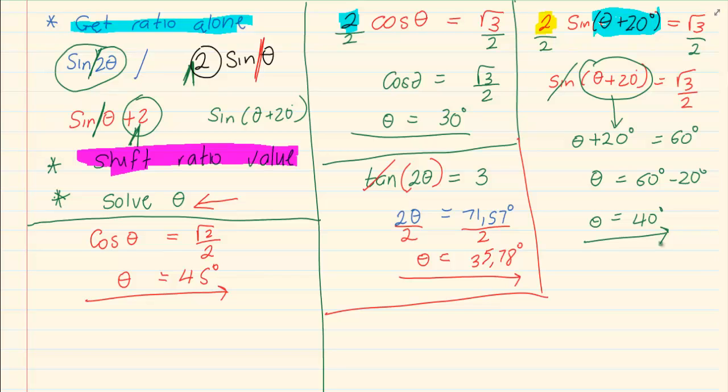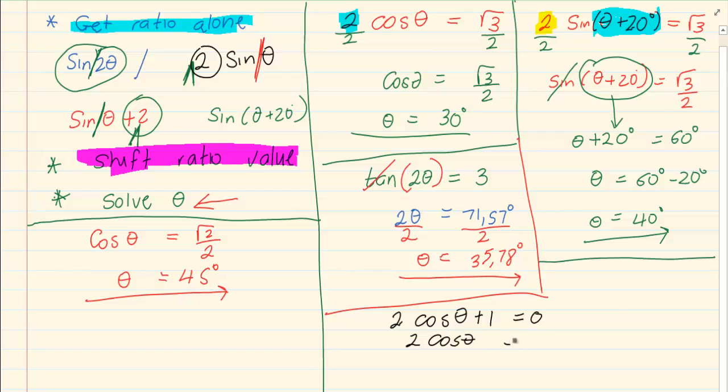These are the three main forms. The last type we have is if I give you 2 cos θ + 1 = 0. Now we move our 1. So we have cos θ = -1/2. Then you're going to press it in your calculator, shift cos -1/2.